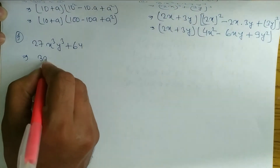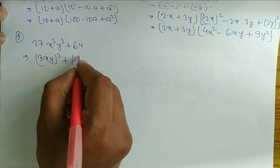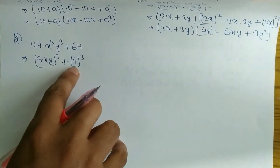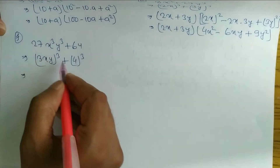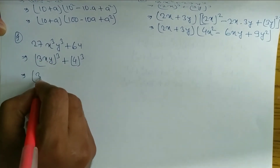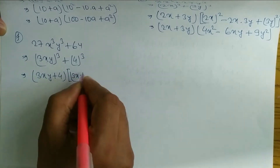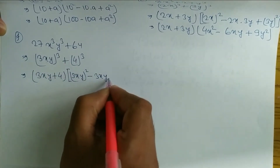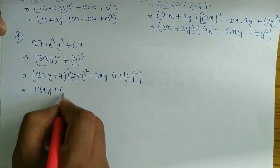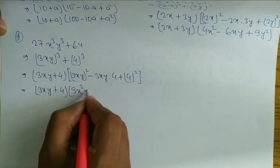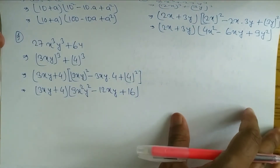For 1F: 27 equals 3 cube, so 27X cube Y cube becomes 3XY whole cube. And 64 equals 4 cube, since 4 times 4 times 4 equals 64. So we have 3XY whole cube plus 4 cube — in the form of A cube plus B cube. Using the formula, A means 3XY and B means 4: we write 3XY plus 4, times 3XY whole square minus 3XY times 4 plus 4 square. Solving: 3XY plus 4, times 9X square Y square minus 12XY plus 16.